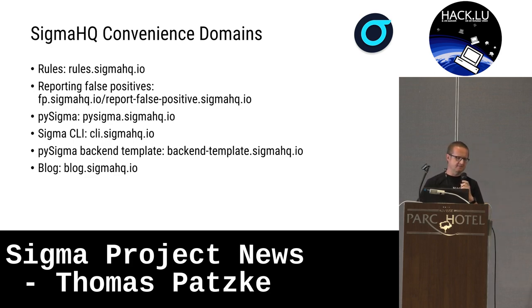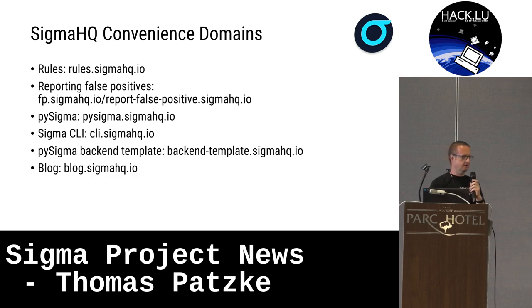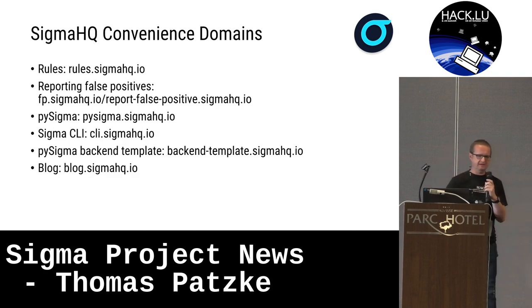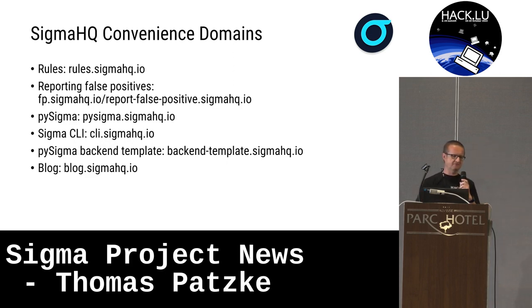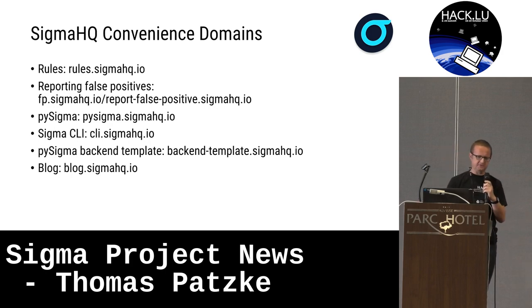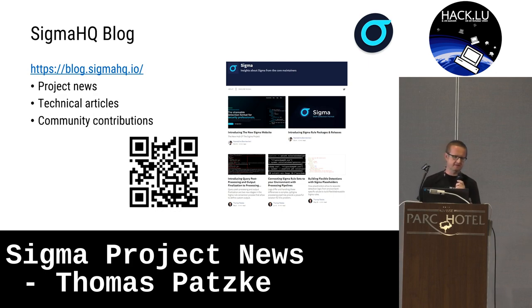There are also some convenience domains. If you want to get to the rules, just type rules.sigmaHQ.io into your browser. If you want to report a false positive to a rule, just enter fp.sigmaHQ.io. There might be some small technical problems currently, but we will fix this soon. And the last domain is something I want to speak specifically about.